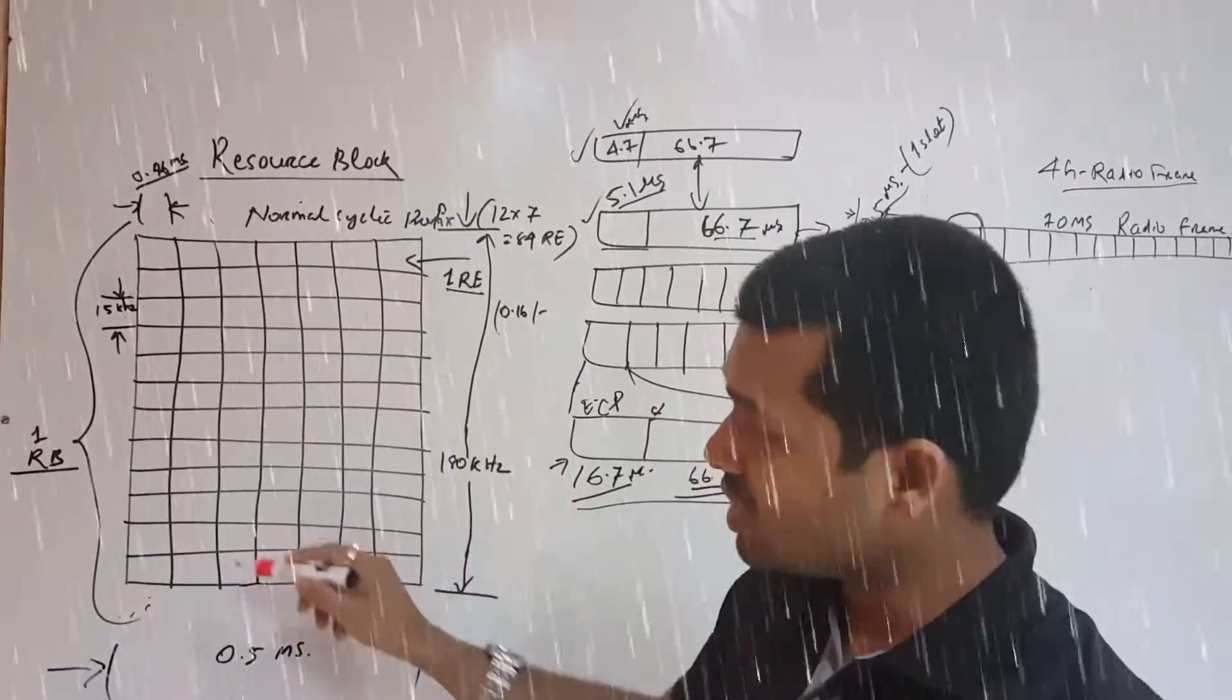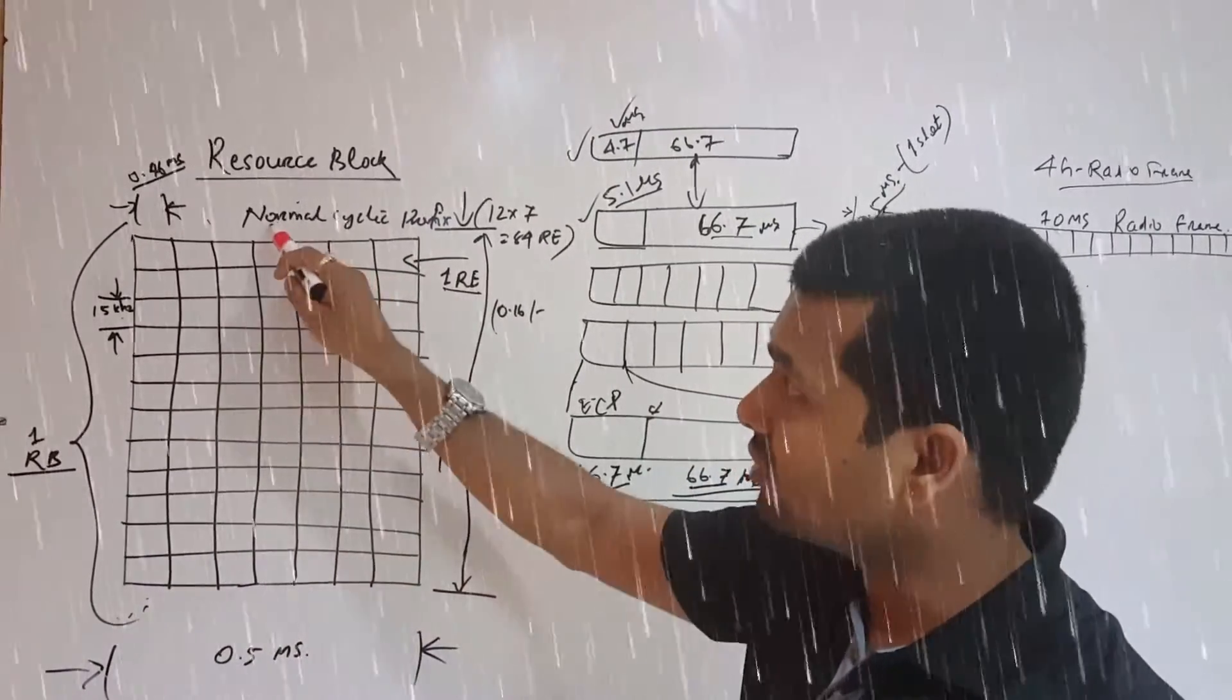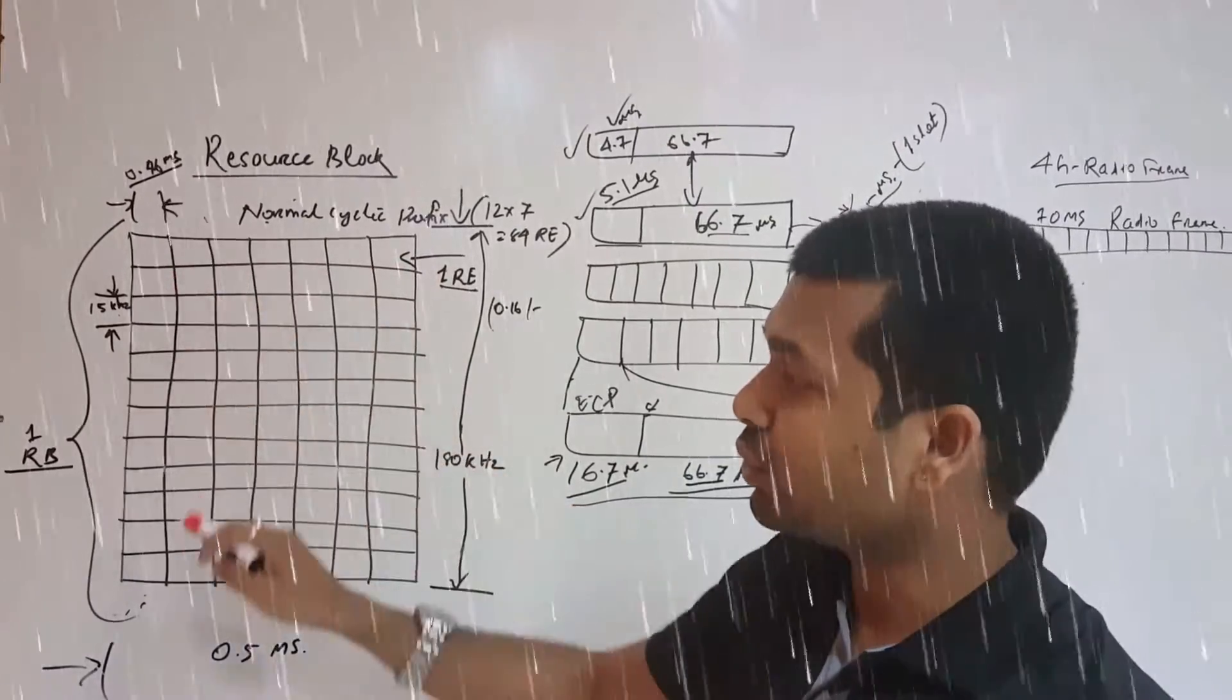So the total number of resource elements in one resource block, if normal cyclic prefix is used, is 7 × 12, that is 84 resource elements.